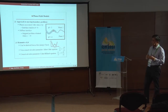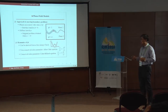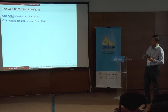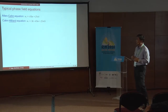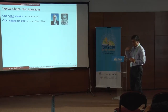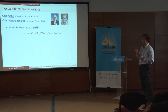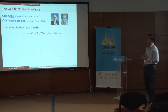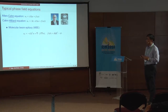For a conserved order parameter, we end up with the Cahn-Hilliard equation, which involves a bi-harmonic operator. We also have the molecular beam epitaxy (MBE) model, which is similar to the Cahn-Hilliard equation, but the nonlinear source term is relevant not only to the function value but also to the gradient of the unknown solution.